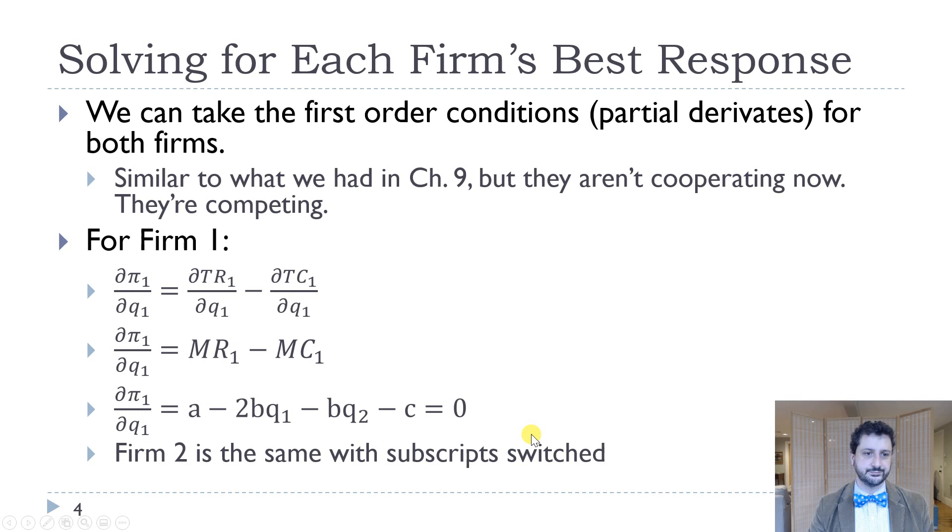So we can go through the first order conditions. They are going to be very similar, so all we're going to do is differentiate, and that's going to give us our two first order conditions. So for firm one, and it's going to be identical for firm two, just with everything switched, we're going to take the derivative of their profit function with respect to quantity. They're choosing quantity. So that means, of course, as always, marginal revenue minus marginal cost, we're going to set that equal to zero. And so that's A minus 2BQ1, that's the same as monopoly, but then we have this extra term, minus BQ2 minus C equals zero.